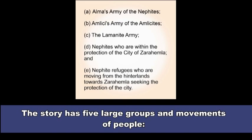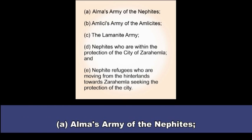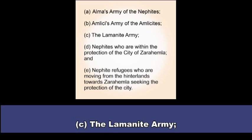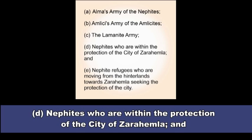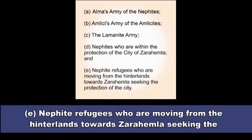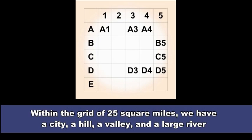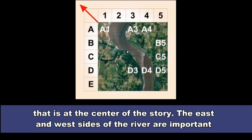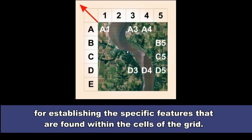The story has five large groups and movements of people. A. Alma's army of the Nephites. B. Amlicite's army of the Amlicites. C. The Lamanite army. D. Nephites who are within the protection of the city of Zarahemla, and E. Nephite refugees who are moving from the hinterlands towards Zarahemla seeking the protection of the city. Within the grid of 25 square miles, we have a city, a hill, a valley, and a large river that is at the center of the story. The east and west sides of the river are important for establishing the specific features that are found within the cells of the grid.